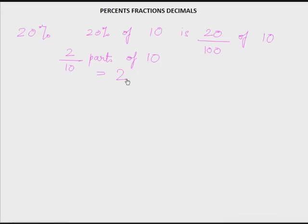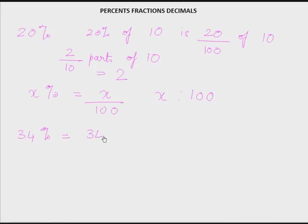Simply put, a percent is comparing a number to 100, or it is a ratio of a number with 100. So x percent is the same as the fraction x over 100 or the ratio x is to 100. So we have already made the connection between percents and fractions. Any percent, say 34%, can be written as a fraction with the denominator 100.